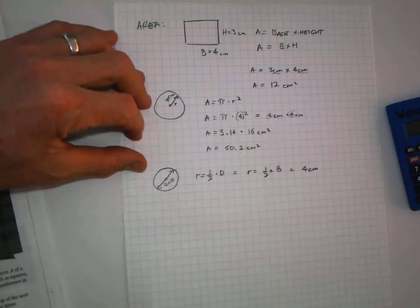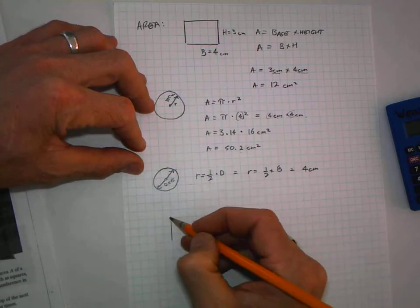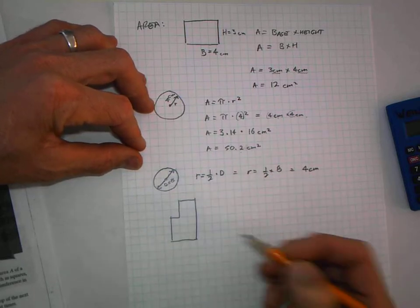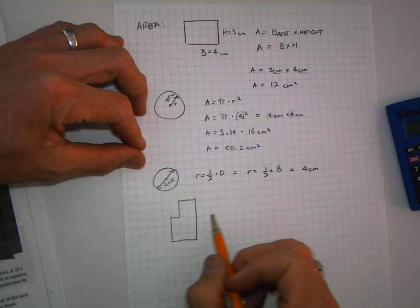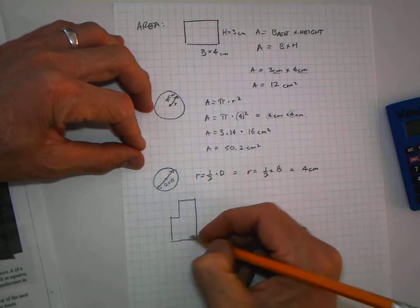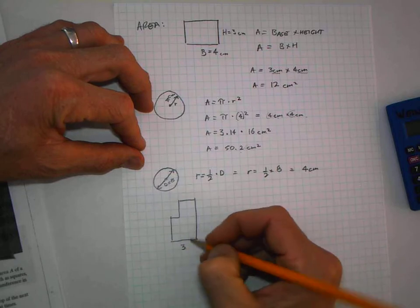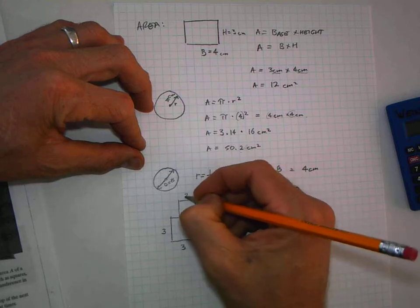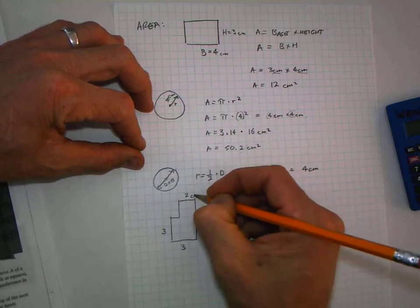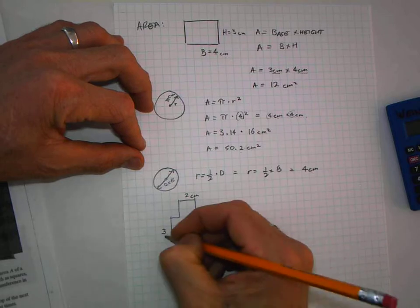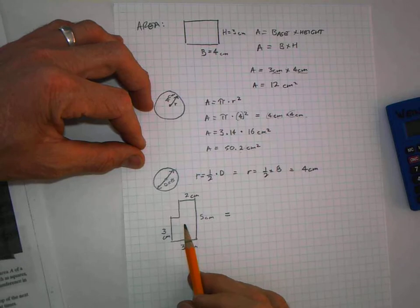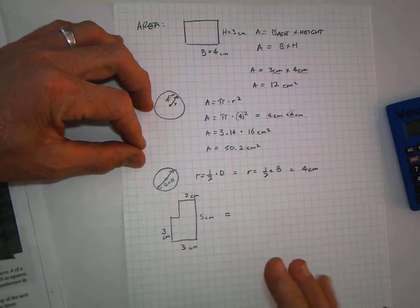What if you get a shape like this that's not a circle and not a rectangle? How do we solve this? Let's put some numbers on here: 3, 3, 5, and 2—all in centimeters. What do we do? You can't simply take base times height. We have to think of this problem as being a composite shape.